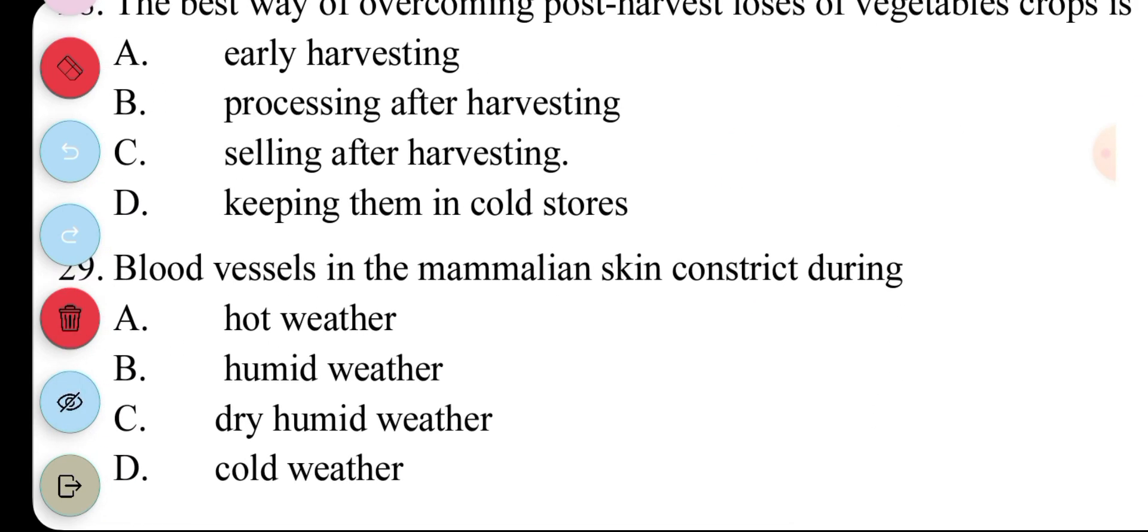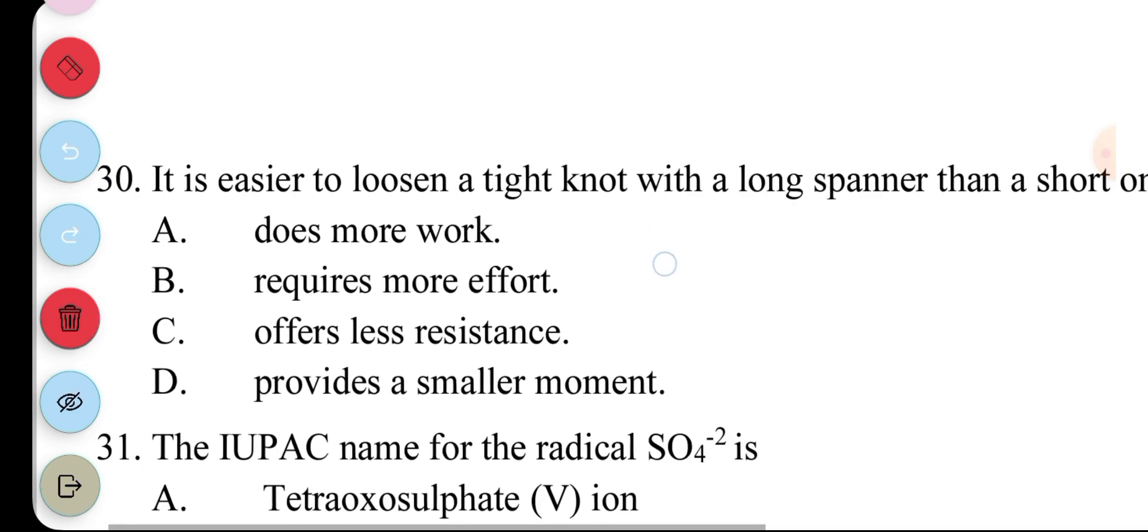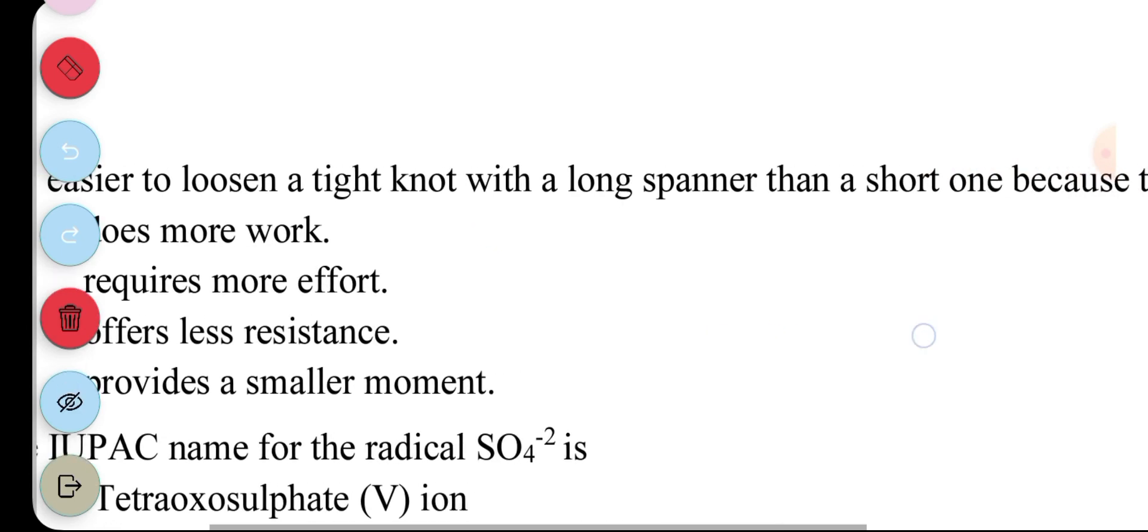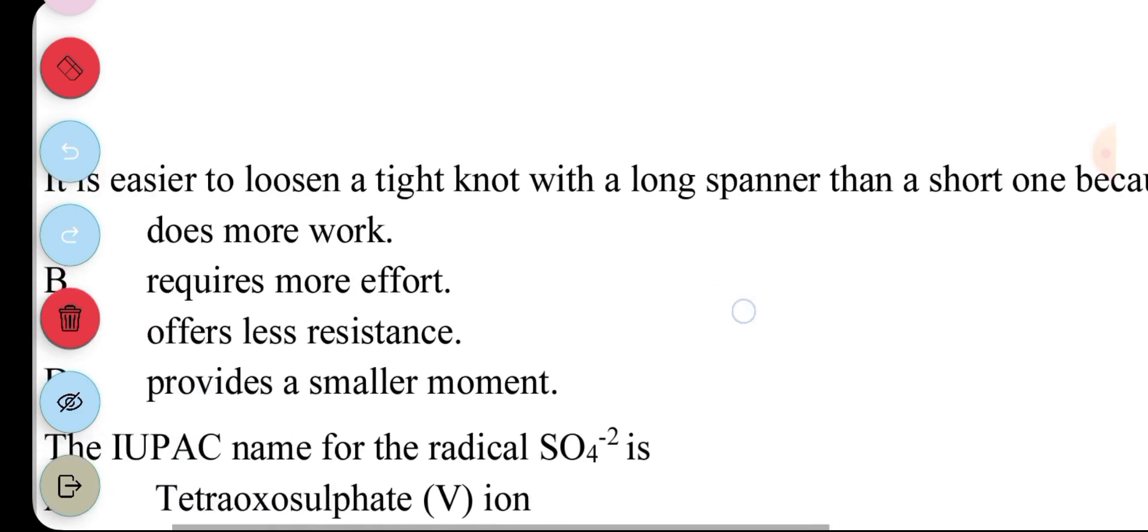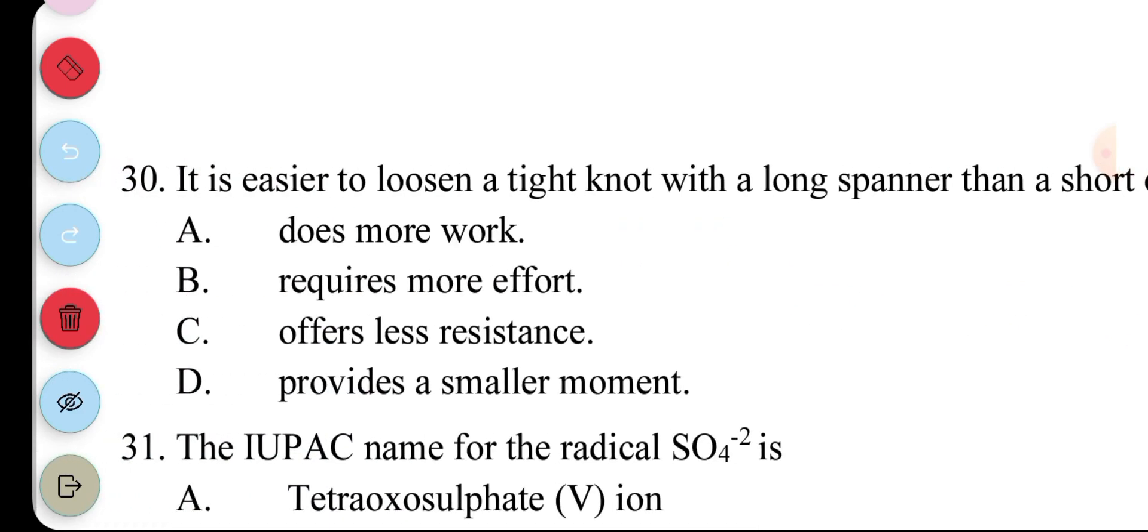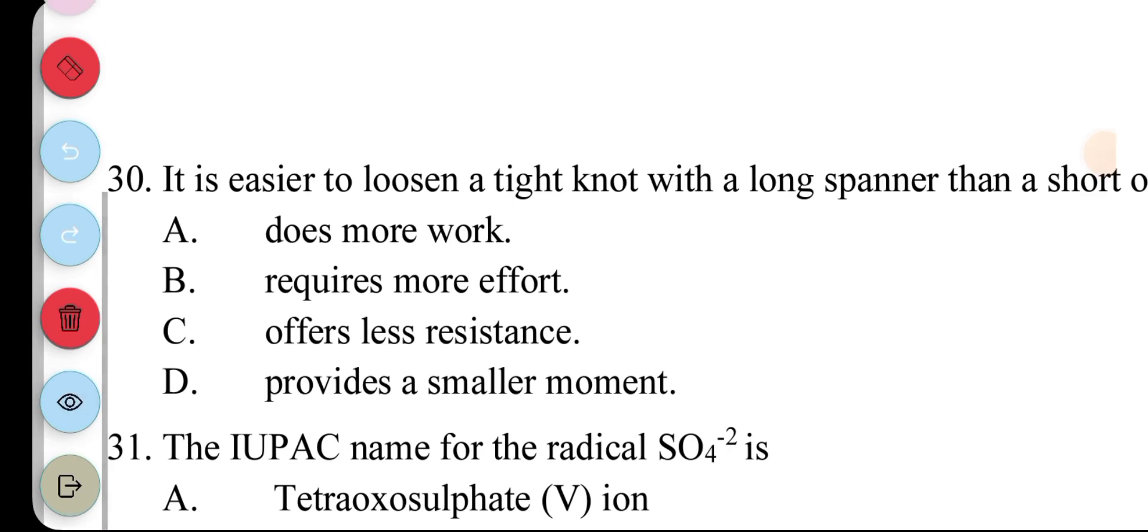29. Blood vessels in a mammalian skin constrict during... A. Hot weather. B. Humid weather. C. Dry humid weather. D. Cold weather. The answer to this question is D. Cold weather. 30. It is easier to loosen a tight knot with a long spanner than a shorter one because... The long spanner... A. Does more work. B. Requires more effort. C. Offers less resistance. D. Provides a smaller moment. So, question 30. The answer is D.